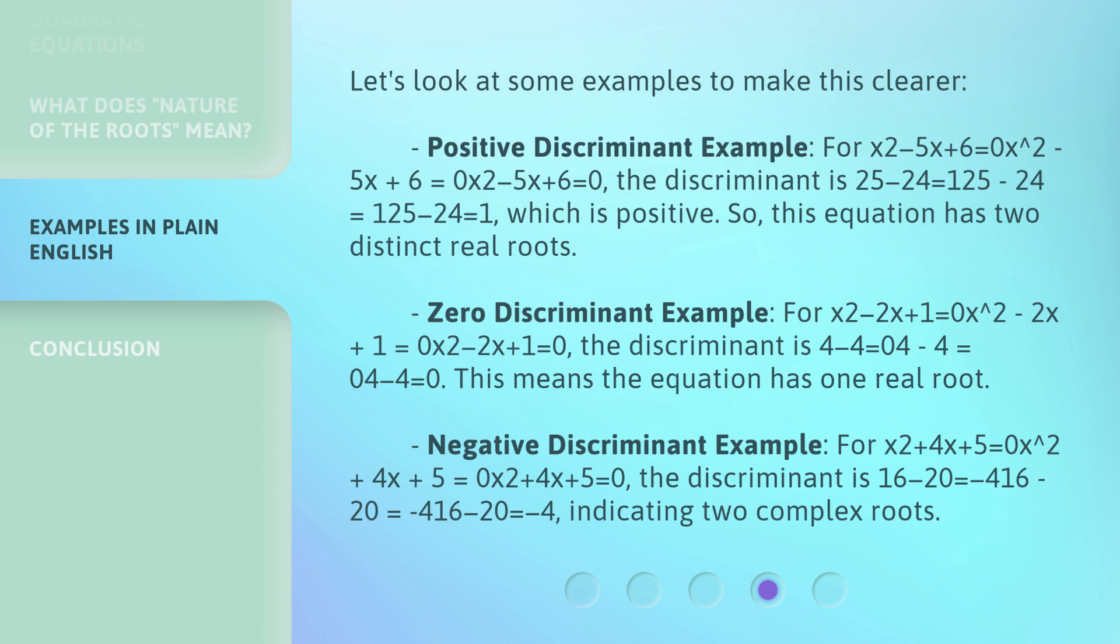Negative discriminant example: For x² + 4x + 5 = 0, the discriminant is 16 - 20 = -4, indicating two complex roots.